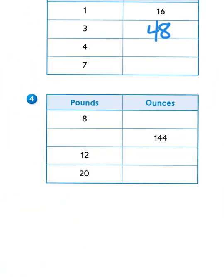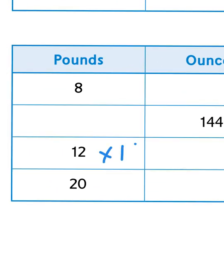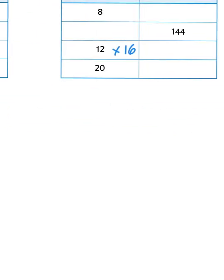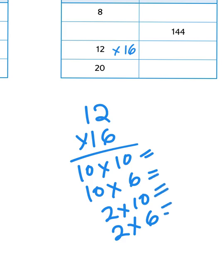So for example, 12 pounds, how many ounces is that? Well I would want to multiply 12 times 16, and the way I can do that is just use a little bit of partial products. 12 times 16 is the same as saying 10 times 10 and 10 times 6, 2 times 10 and 2 times 6. I'm now just going to solve all four of those little multiplication problems.